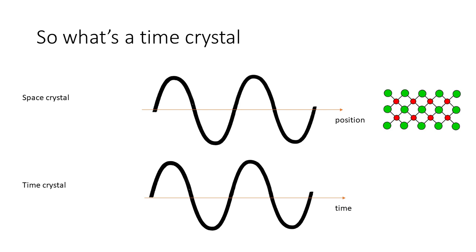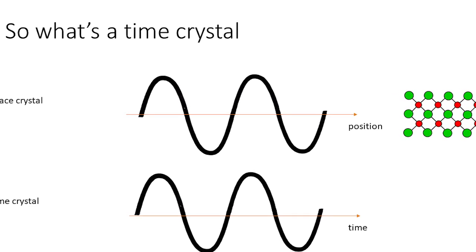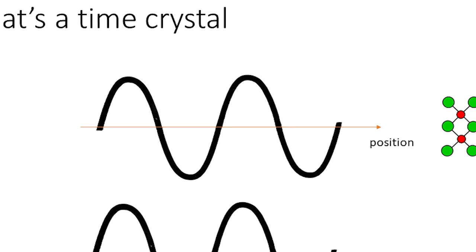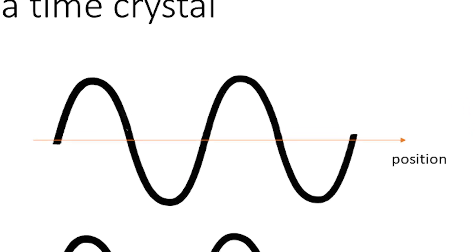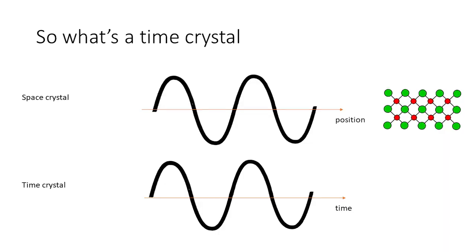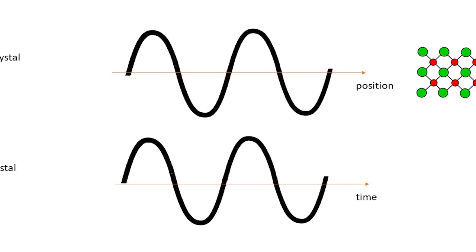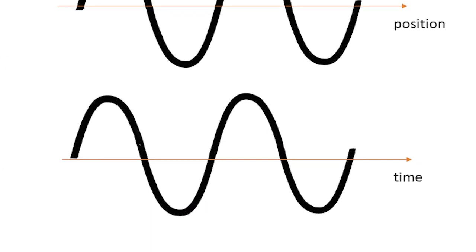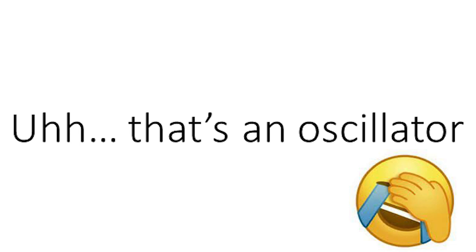Okay, so what's a time crystal? If you look at the crystal in terms of position, you'll see that the atoms are arranged in some periodic way. If you plot the atomic density within the crystal, it'll go up and down. Those are oscillations in position. So a time crystal would be some oscillations not in position but in time. Okay, that sounds fine, but that's just an oscillator. So what's so amazing about that?